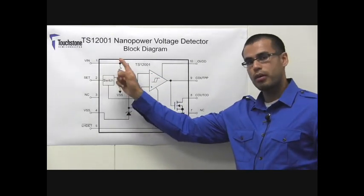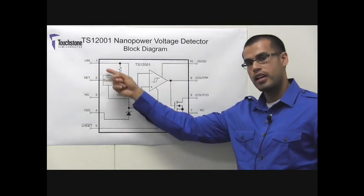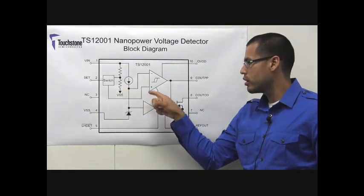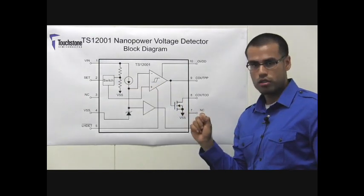If the set voltage is above 90 millivolts, the comparator will be controlled by the set pin. If it is below 90 millivolts, the comparator will be controlled by the voltage generated by the internal voltage divider.